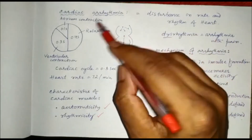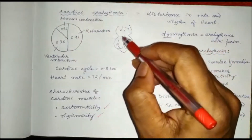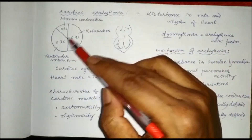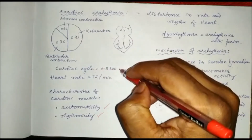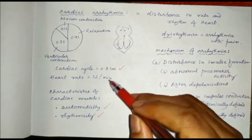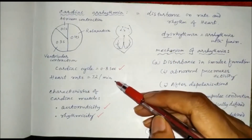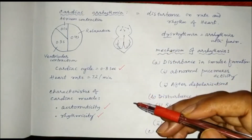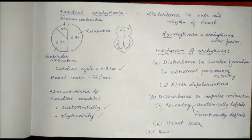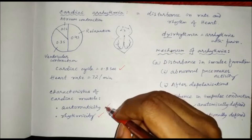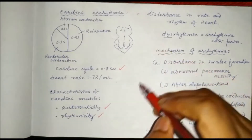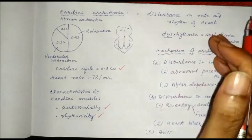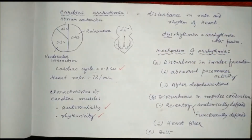The contraction of atrium is for 0.1 second, followed by contraction of ventricle for 0.3 second, then they relax for 0.4 second. So the cardiac cycle takes 0.8 second, and the heart rate is 72 per minute, so there is a rhythm. So two characteristics are there in cardiac muscle: one is automaticity and the other is rhythmicity. So the rate is constant and there is a rhythm of the contraction of the heart.